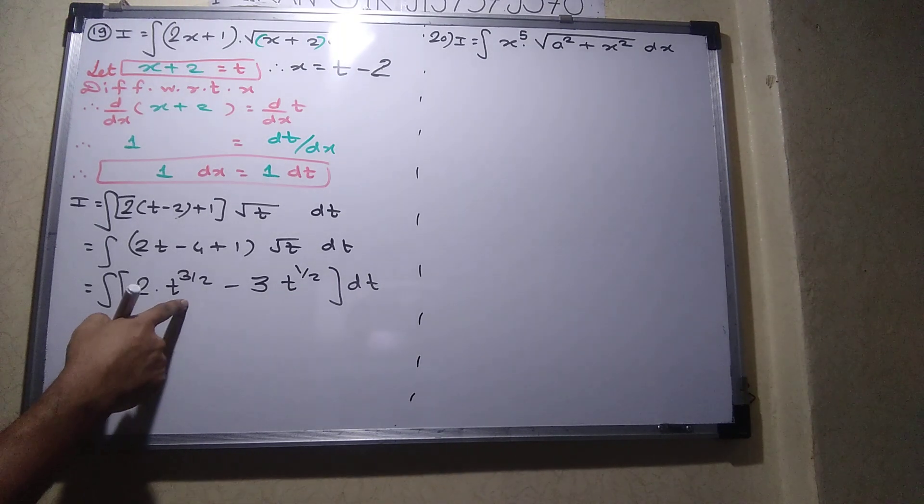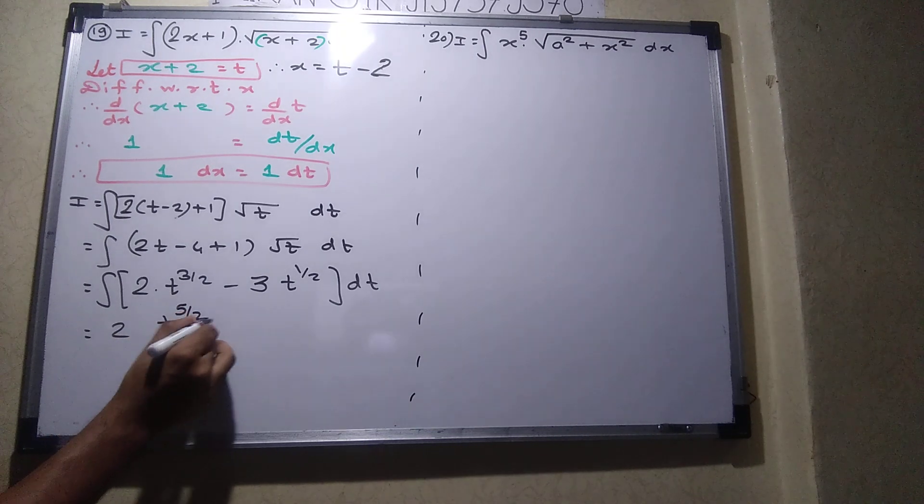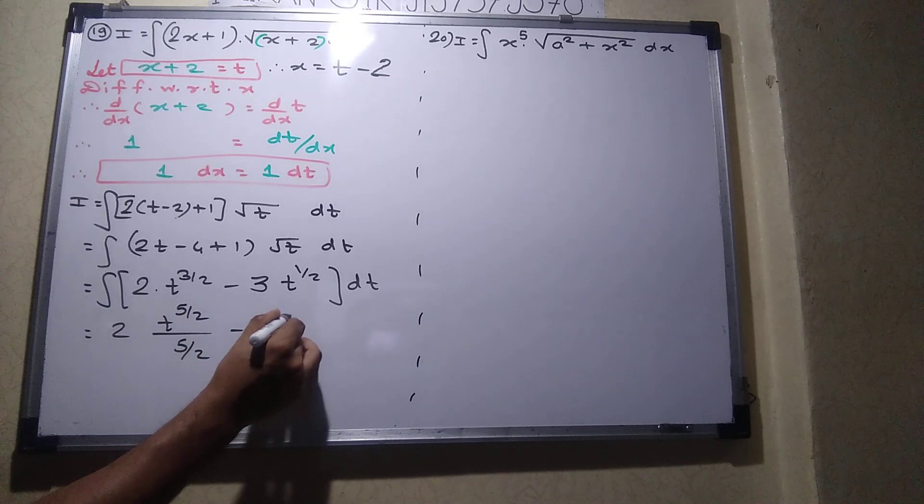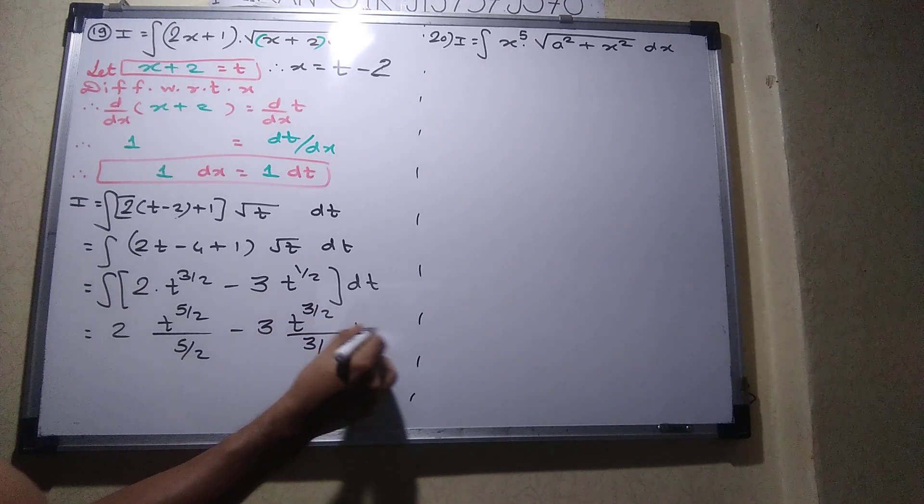How to take integration? T raise to 3 by 2 integration. 3 by 2 plus 1 which is 5 by 2 upon 5 by 2. What is it? 1 by 2 plus 1 is what? 3 by 2 upon what? 3 by 2 plus C.